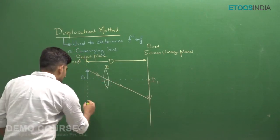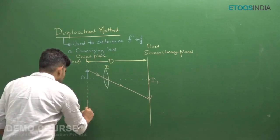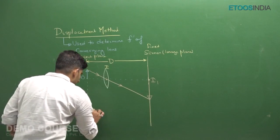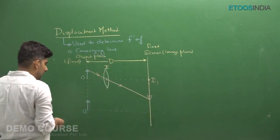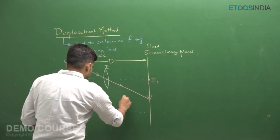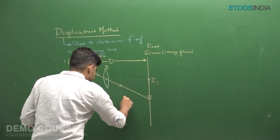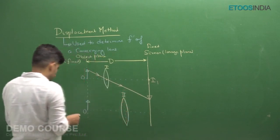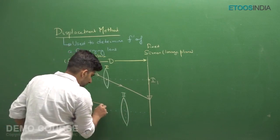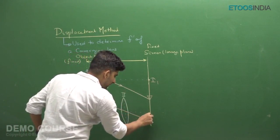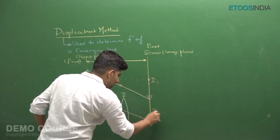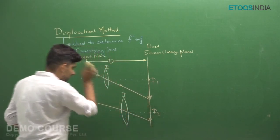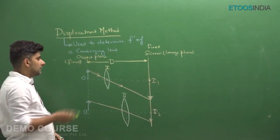Redrawing the same object, I will be moving the lens to a new position — this is the second position of the lens, marking it as position 2, such that again an image I2 on the screen is obtained for this object. So for two different positions of the lens, we get two different images on the same screen.